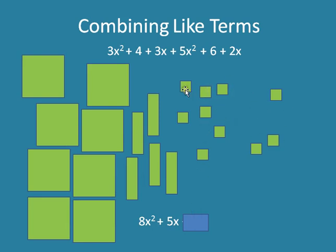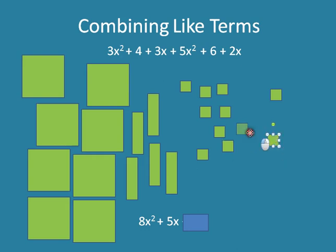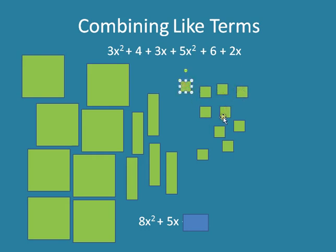Now the last ones — I have my constants. Each of these blocks is just worth 1. So I put them in the same group so I can count them. These are the ones that don't have x's or x squareds after them — there's no variables after them. 1, 2, 3, 4, 5, 6, 7, 8, 9, 10. So plus 10.